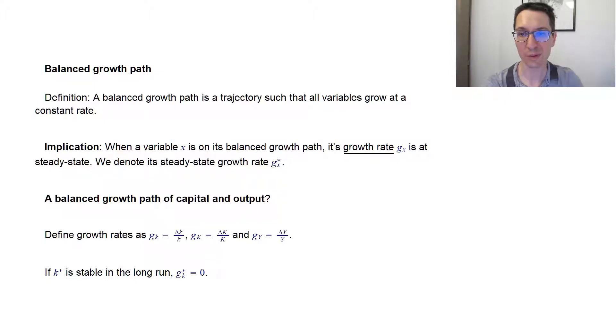And this is important for you to get your mind around. So if some variable x here is on its balanced growth path, then x changes all the time. But if the growth rate is constant, then it means that it has a single value. So we can see that its growth rate is at steady state. We will denote this growth rate by g of x with a star, meaning what growth rate does that variable have on the balanced growth path?